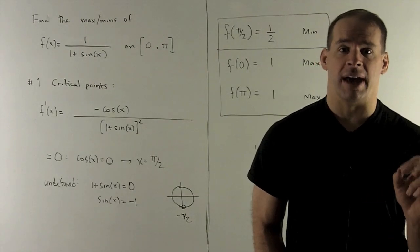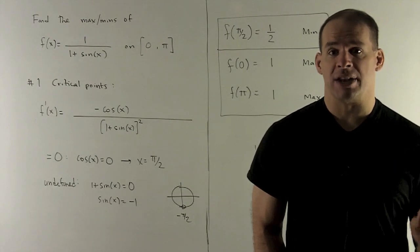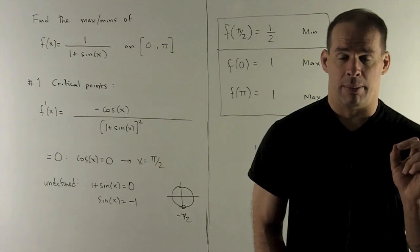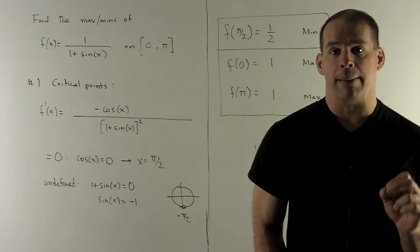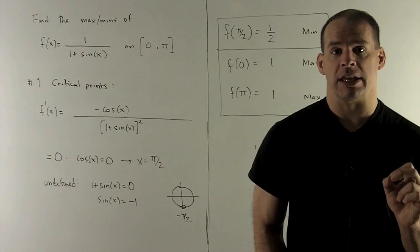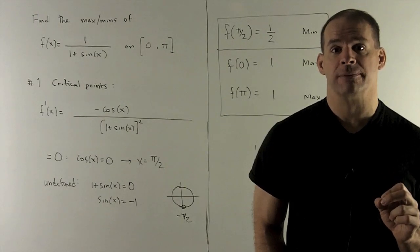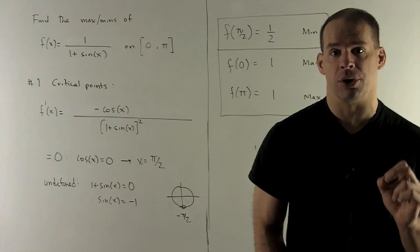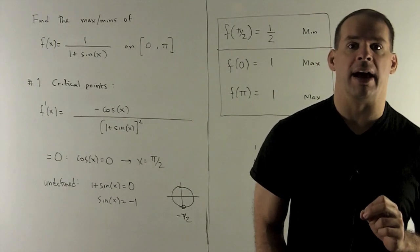Well, if I want cos(x) = 0, cosine is the x value in the unit circle. So if my cosine equals 0, that means I'm on the y-axis, and we're looking at x = π/2. We would also have -π/2, but since we're in the interval from 0 to π, we only keep π/2.